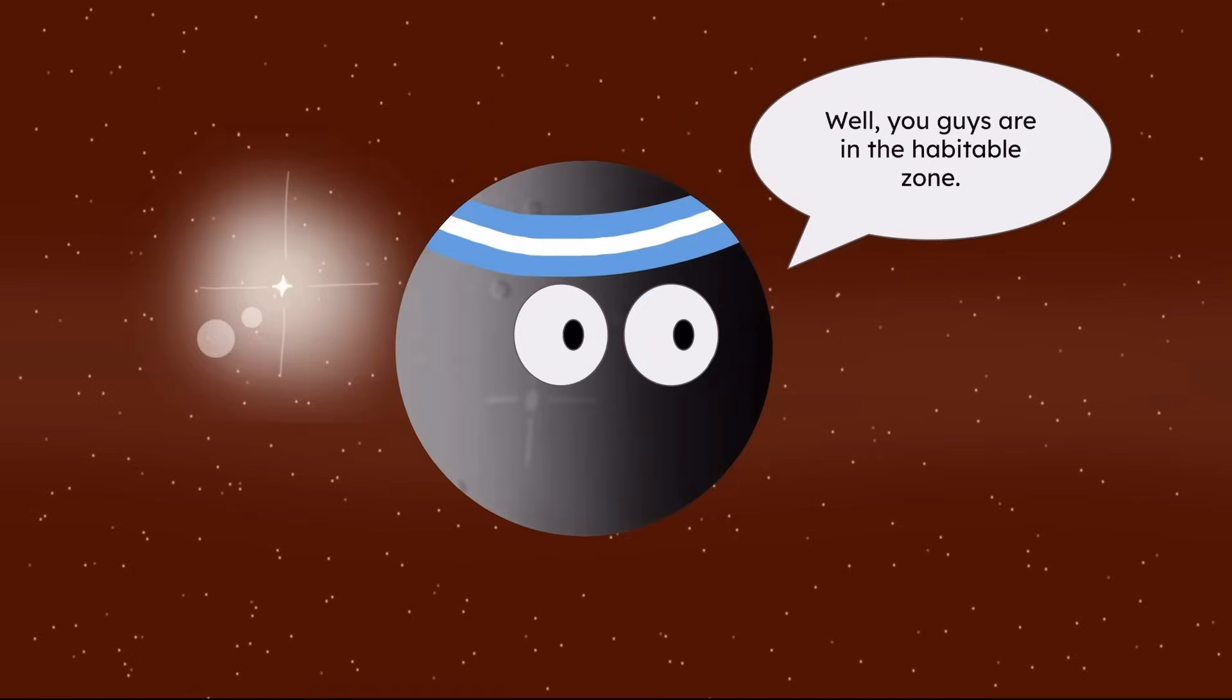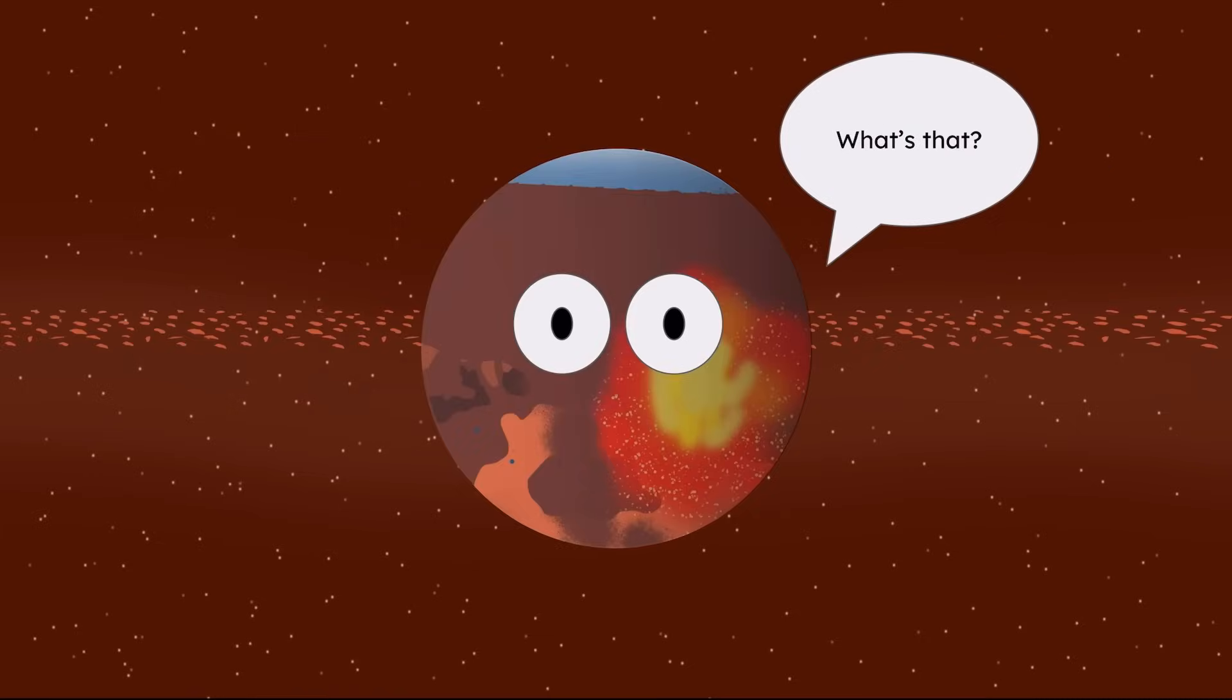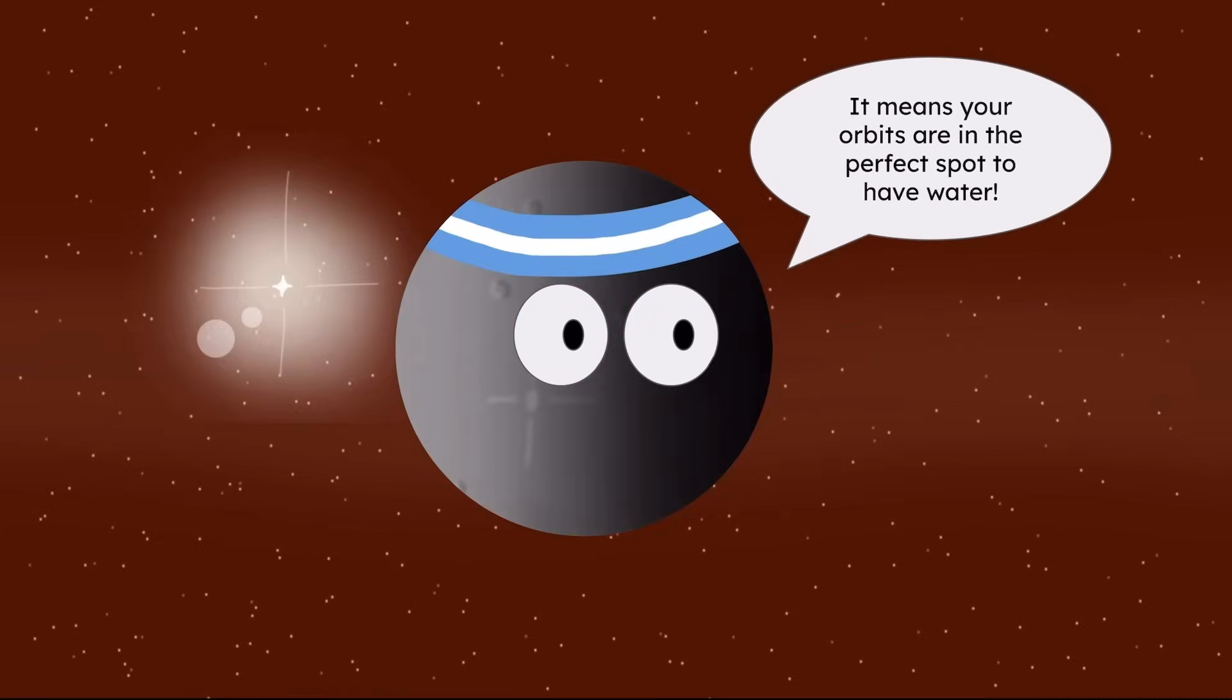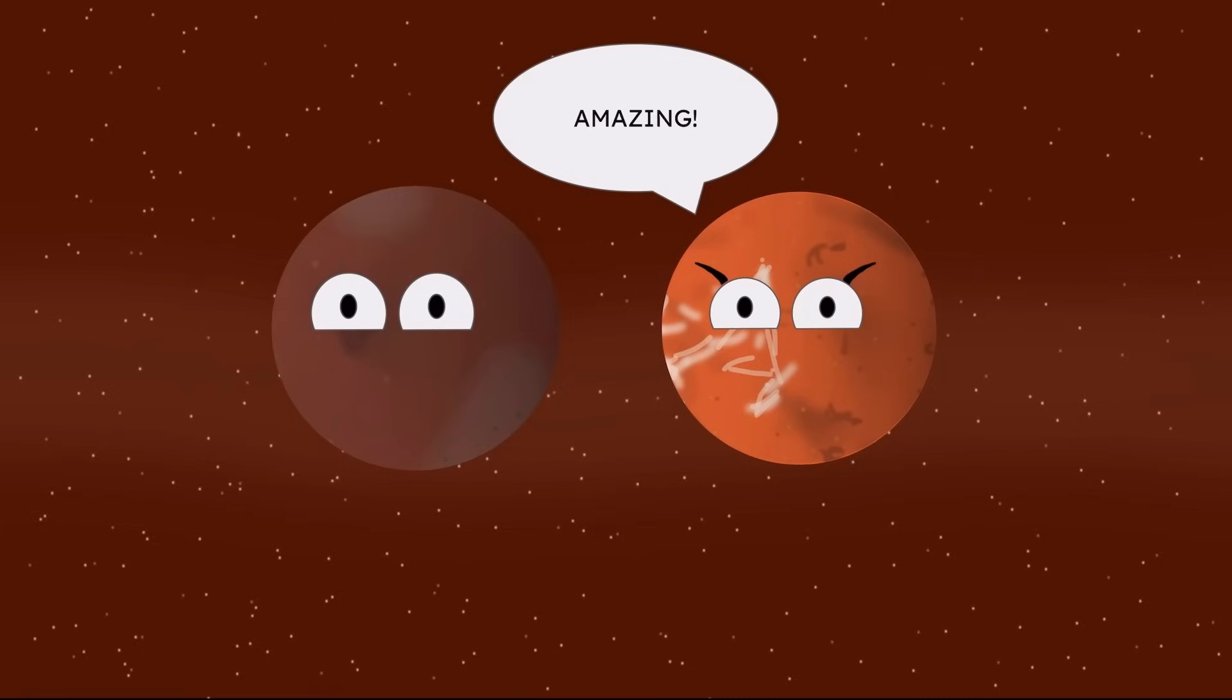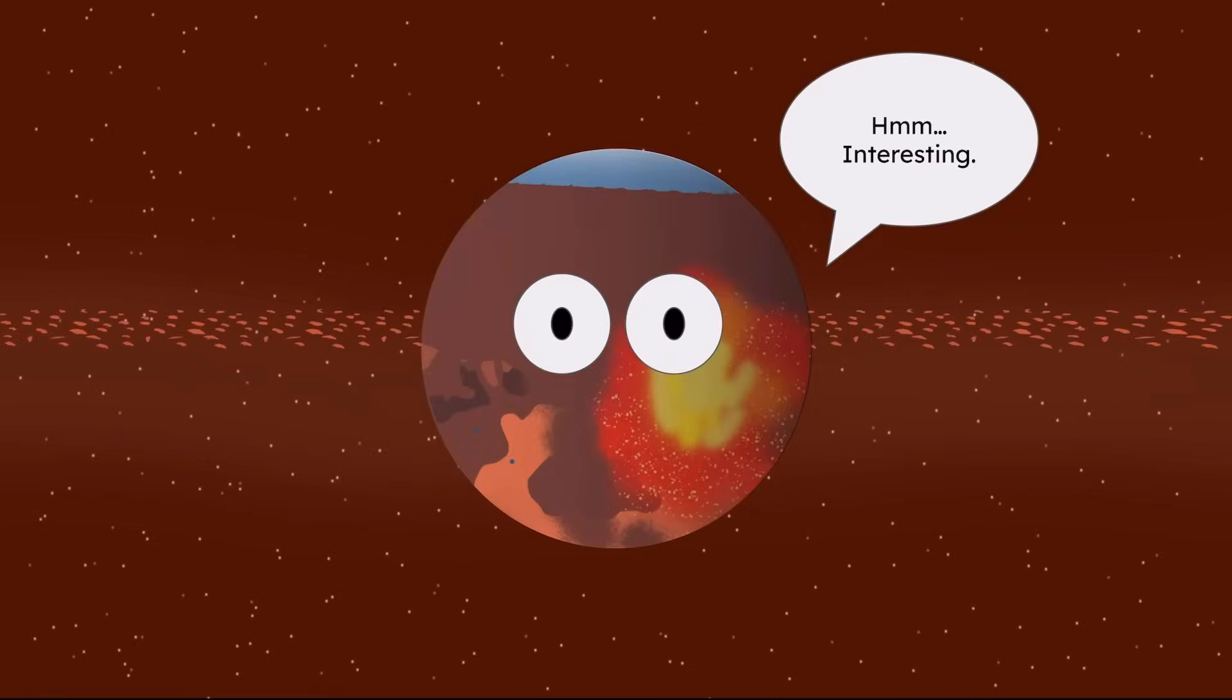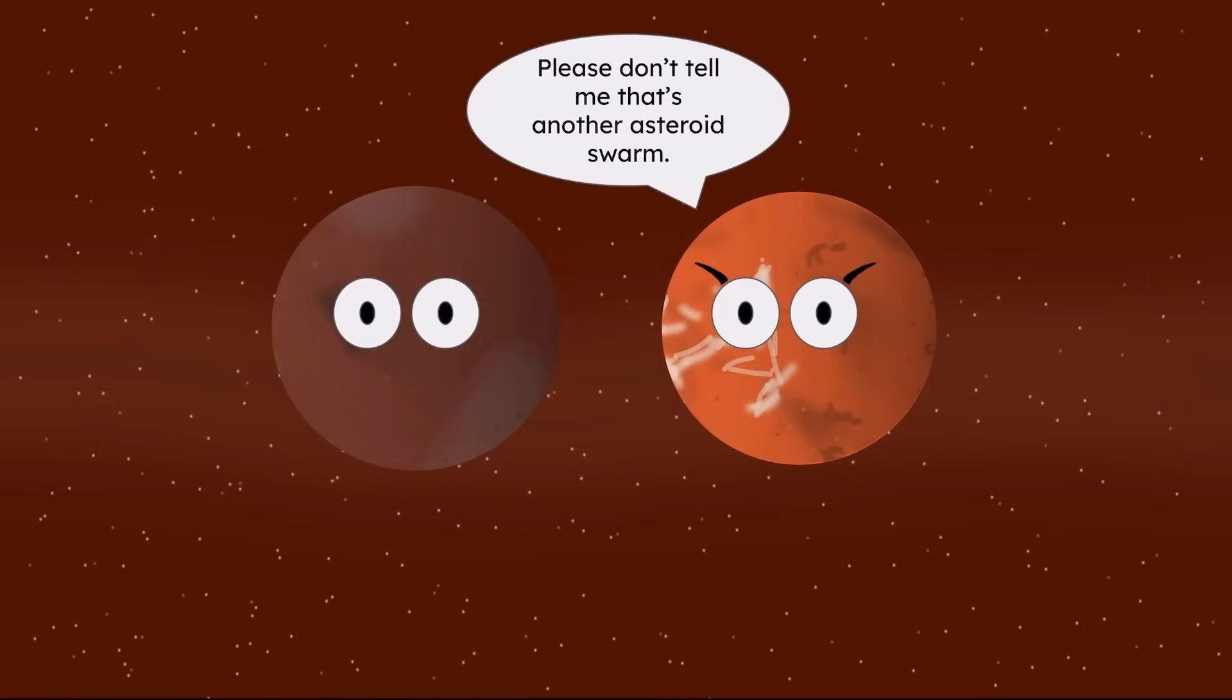Well, you guys are in habitable zones. What's that? It means your orbits are in the perfect spot to have water. Amazing! Hmm, interesting.